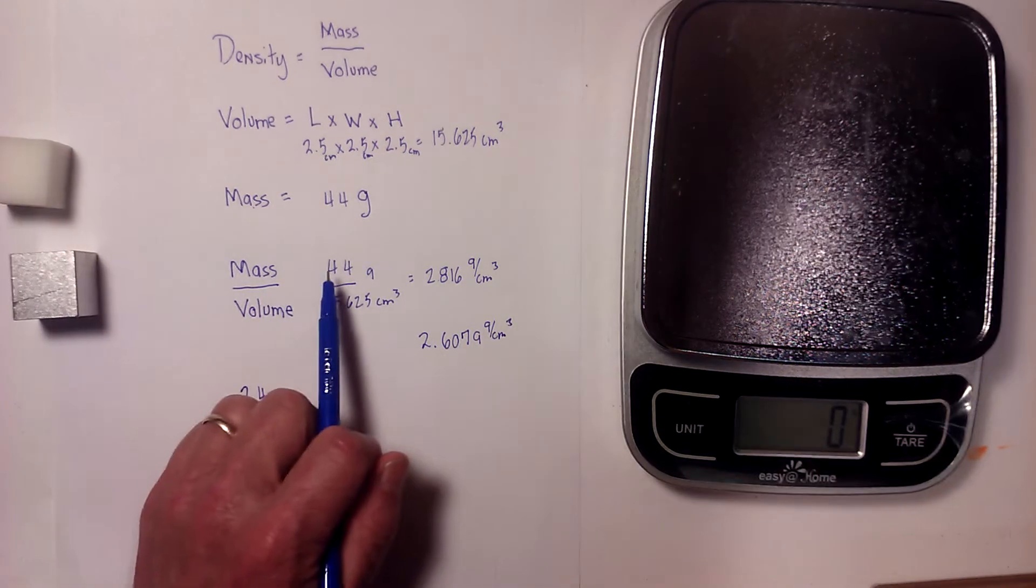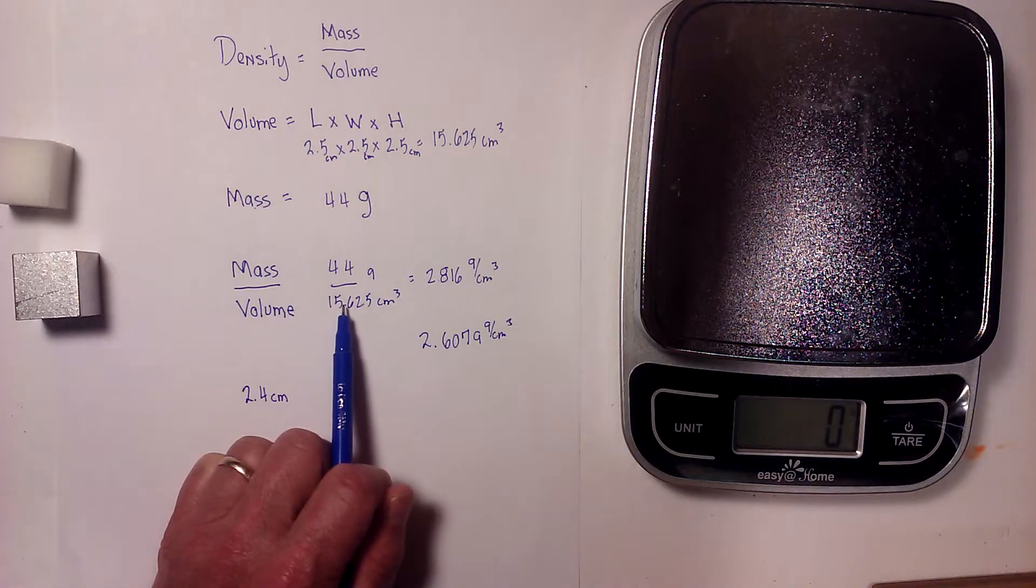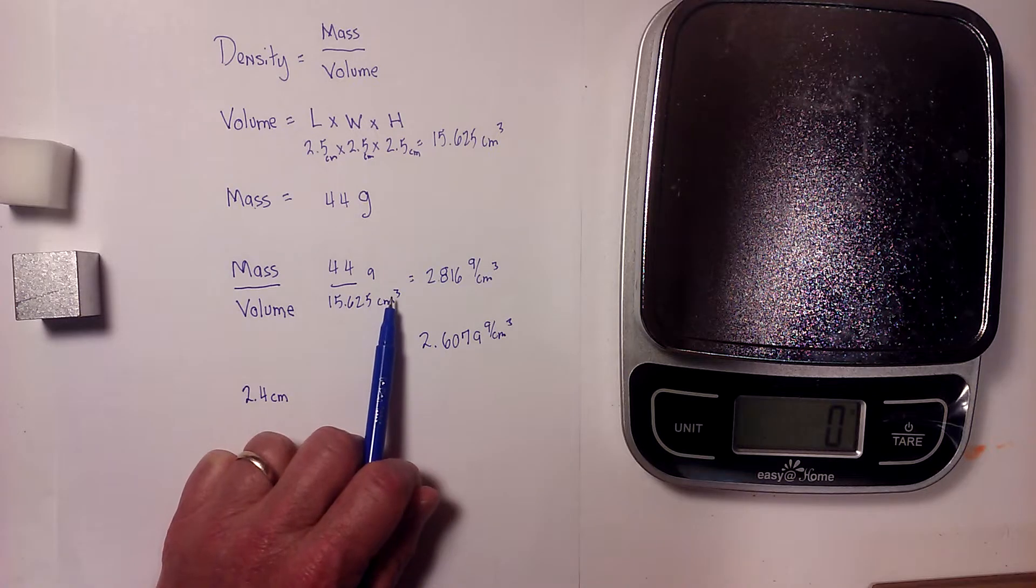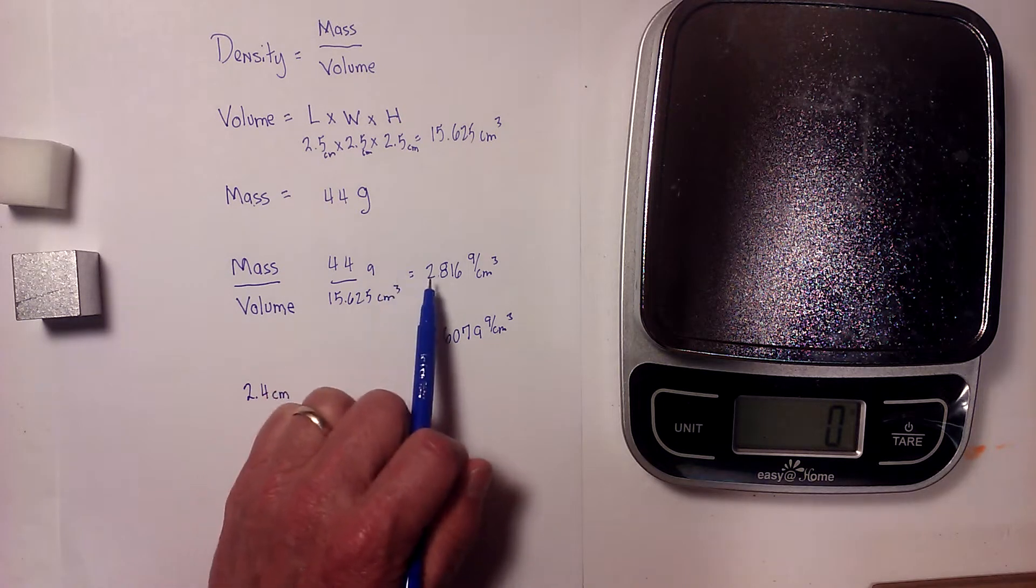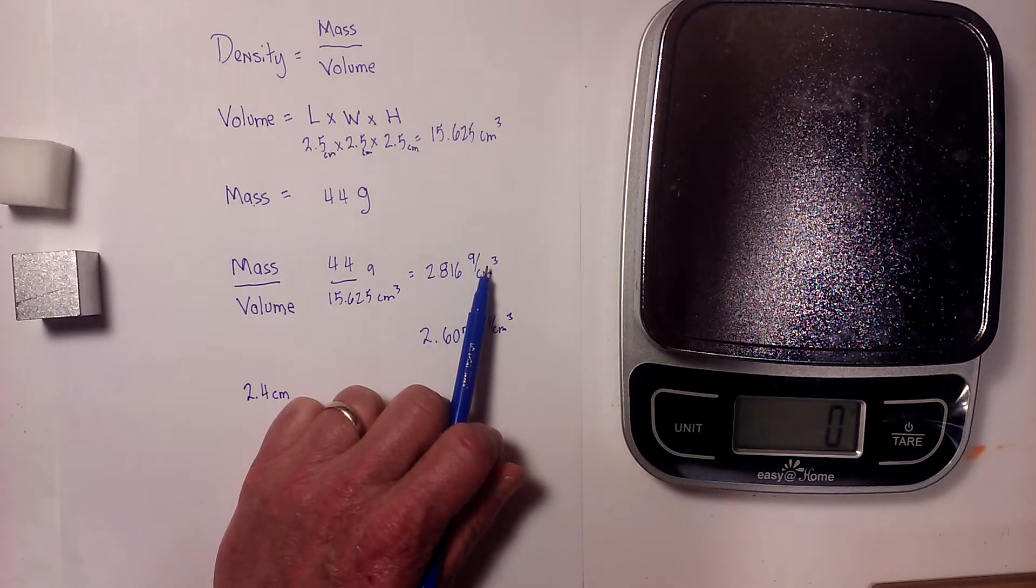So to calculate the density, it is 44 grams divided by 15.625 centimeters cubed, and that gave me a density of 2.816 grams per centimeters cubed.